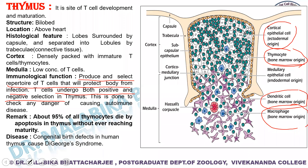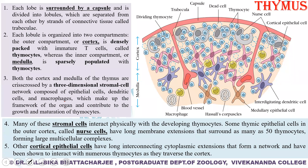Many of the stromal cells interact physically with the developing thymocytes. Some of the thymic epithelial cells in the cortical region have long membranous extensions — these are called nurse cells. They surround as many as 50 thymocytes, forming large multicellular complexes that help in the development of thymocytes.